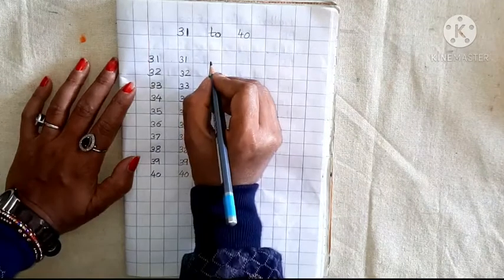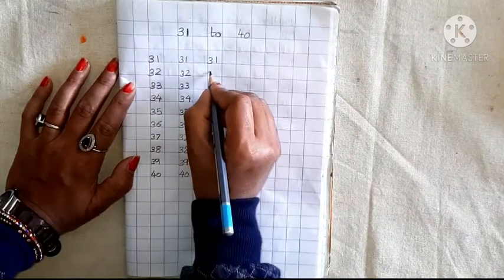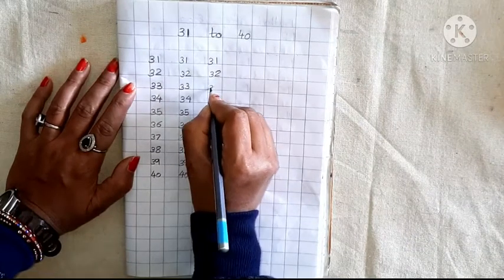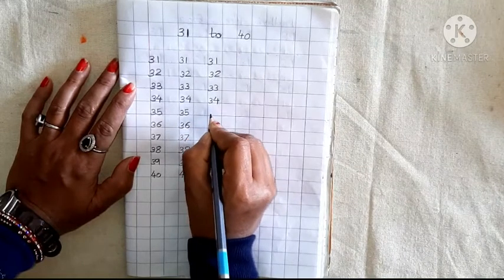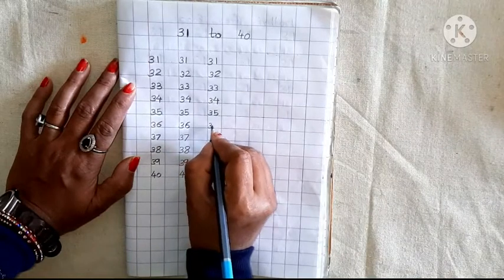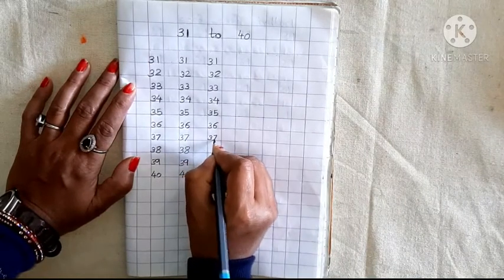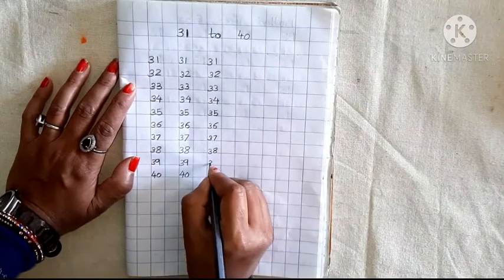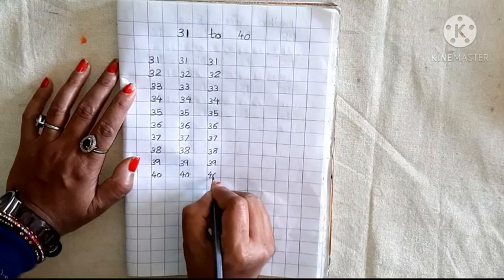Speak and write. Okay? Again. Again. 3, 1, 31. 3, 2, 32. 3, 3, 33. 3, 4, 34. 3, 5, 35. 3, 6, 36. 3, 7, 37. 3, 8, 38. 3, 9, 39. 4, 0, 40. Okay?